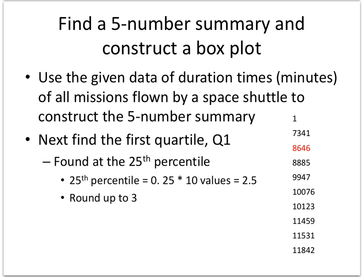Then find the first quartile, which is at the 25th percentile. So on part B of lecture 3.4, we saw how to find percentiles by taking 0.25 times the total number of values. We get 10.5 and we round up to the next third value, which would be 8646 at the 25th percentile.